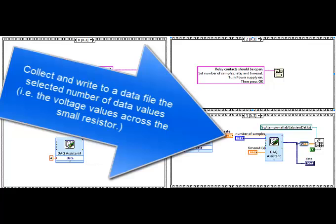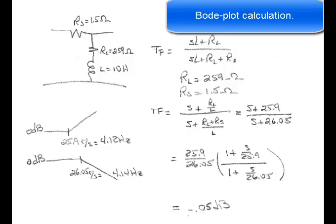This collects and writes to a data file the selected number of data values, in other words, the voltages across the small resistor. Here's a Bode plot calculation.